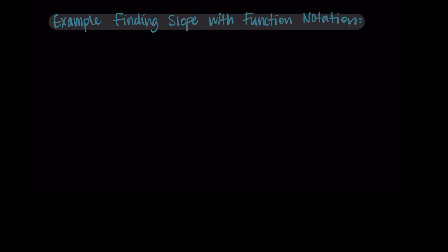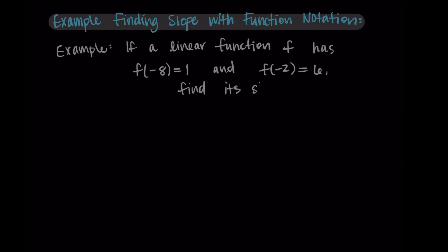Hi and welcome back. In this video, I'm going to work through an example of how we find the slope using function notation. So here, let's say we have a linear function f that has these two points: f(-8) = 1 and f(-2) = 6. And from this information, let's find the slope of the line.